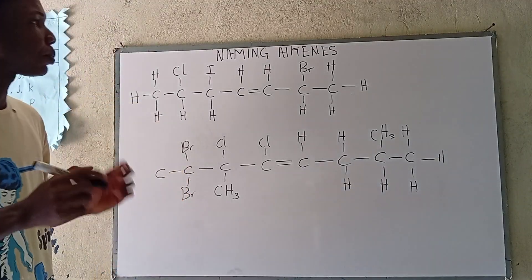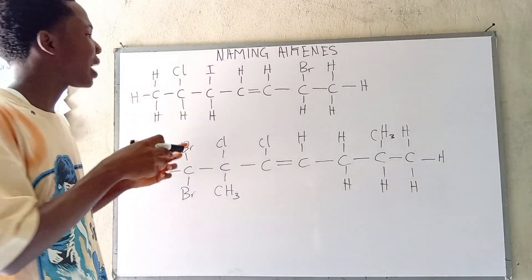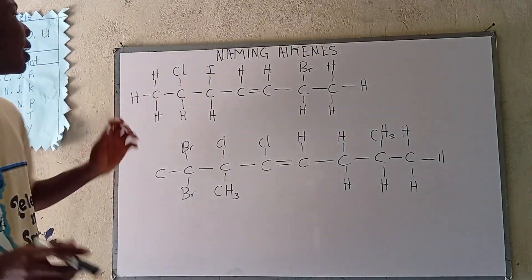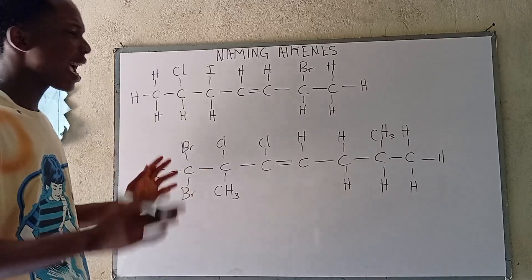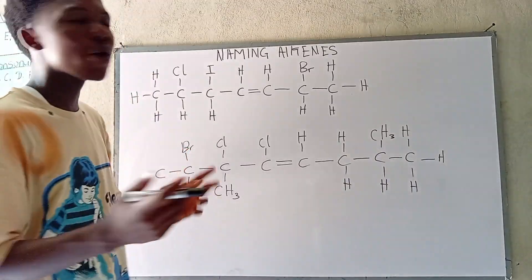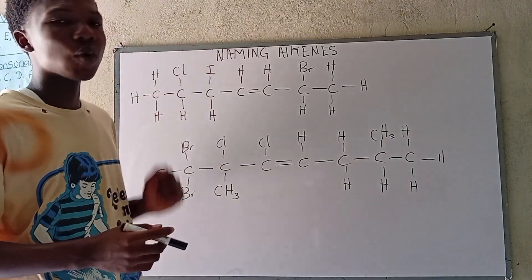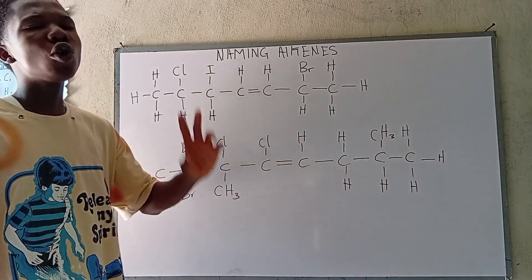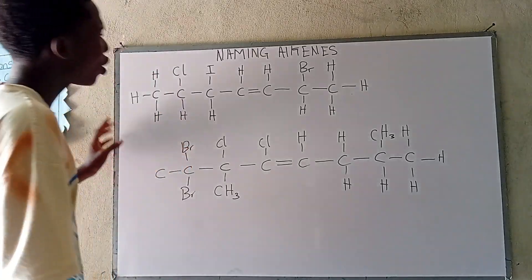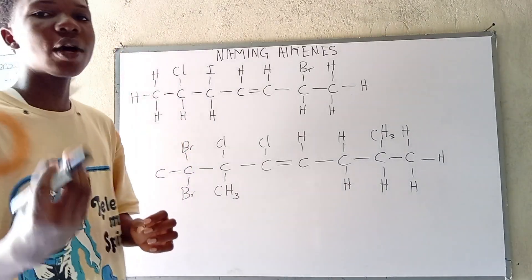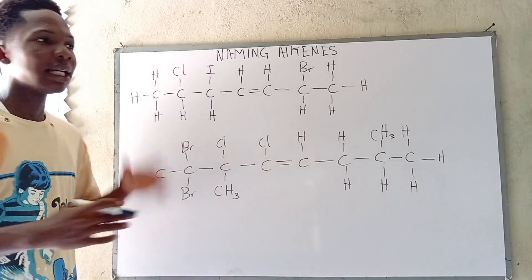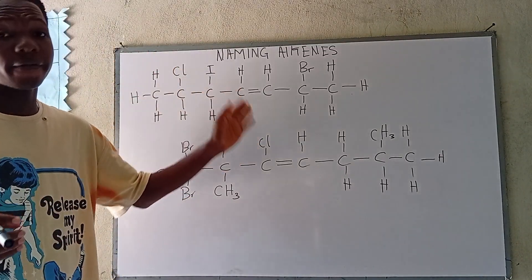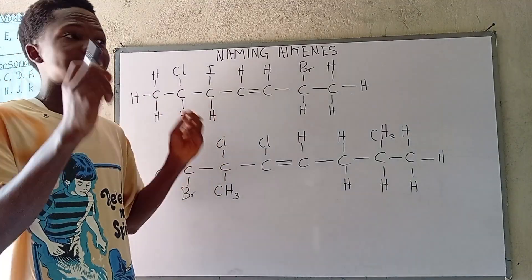Let's dive in quickly and look at how we can name this compound. The number one thing we should always consider when we are naming our alkenes is the double bond — we must always consider the double bond first. Then we find the longest carbon chain. Because of the double bond, we first recognize the double bond before we look for the longest carbon chain.